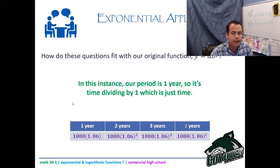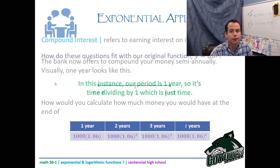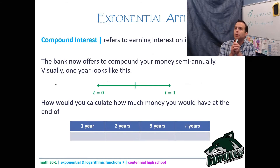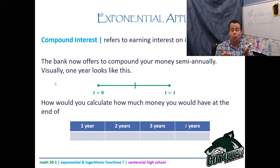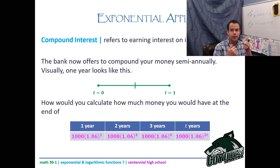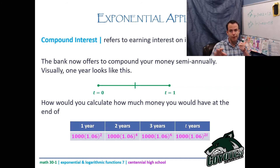Now, if we compound semi-annually — every half year — how many times do we compound in one year? Twice. So the exponent for one year is 2, for two years it's 4, for three years it's 6, and for t years it's 2t.